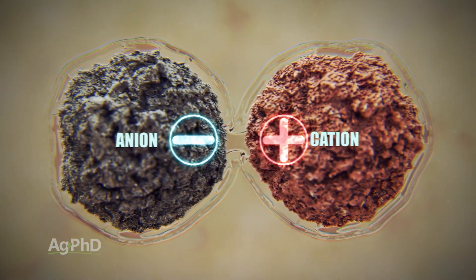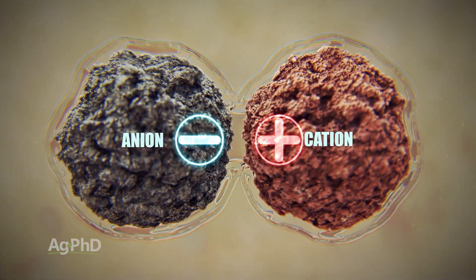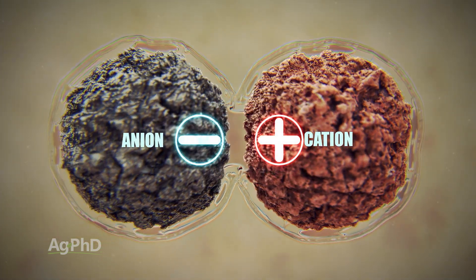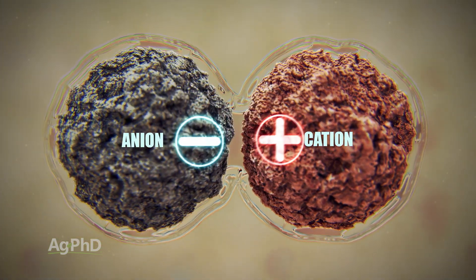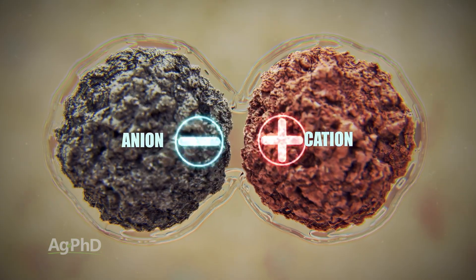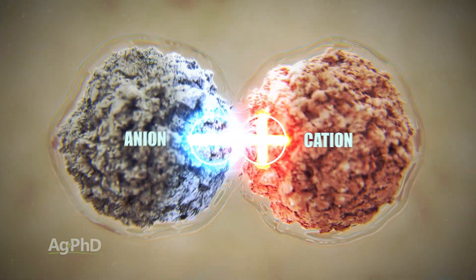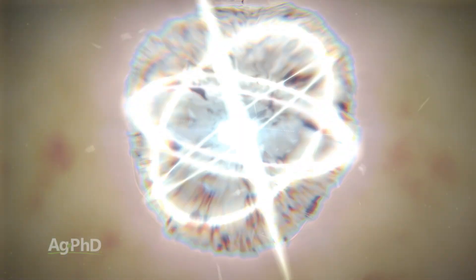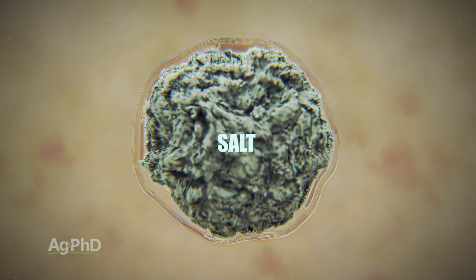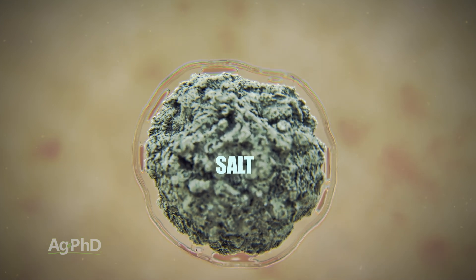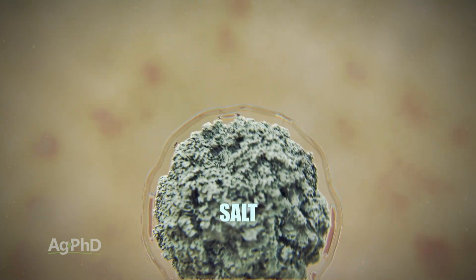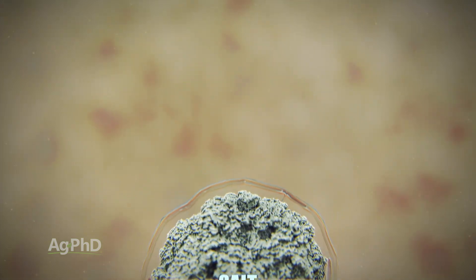Let's define some things first — we're going to really dumb this down. I don't care if you slept through all your college classes, we're going to make this as simple as possible. A salt is simply just a cation — positively charged — and an anion — negatively charged — those two together. A cation and an anion is a salt.